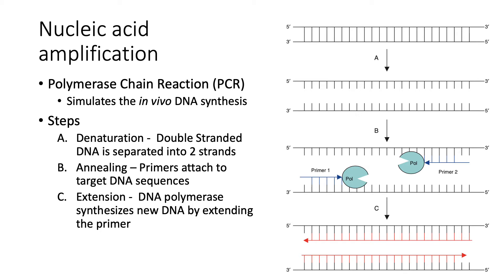These primers are so specific that they can identify bacteria up to the species and subspecies level, and can even identify certain phenotypic characteristics like antibiotic resistance. The last step in PCR is extension, in which DNA polymerase synthesizes new DNA by extending the primer. Using these three steps, we can amplify our target DNA.